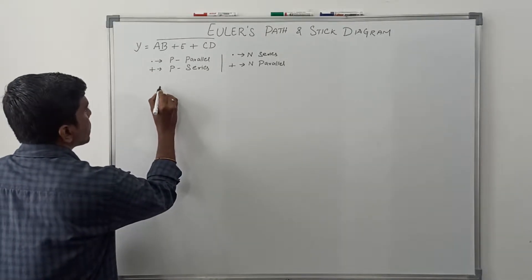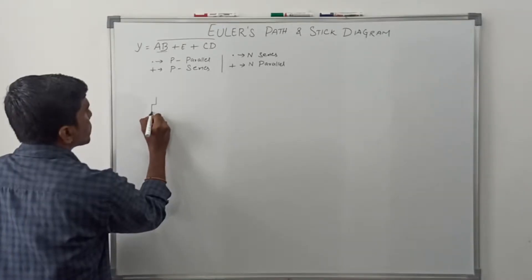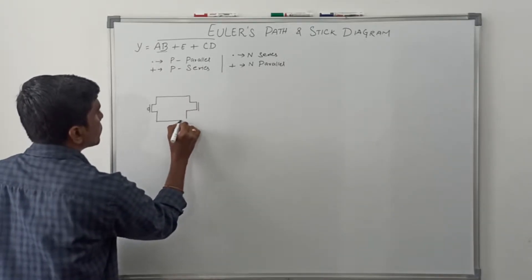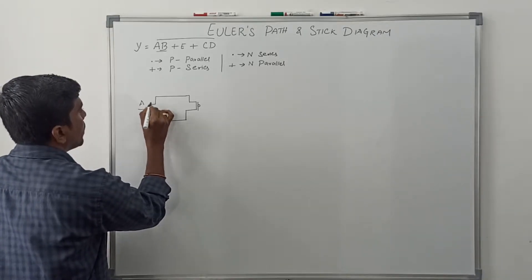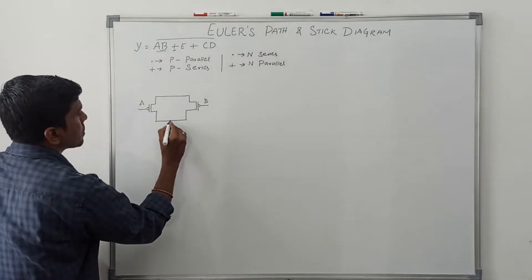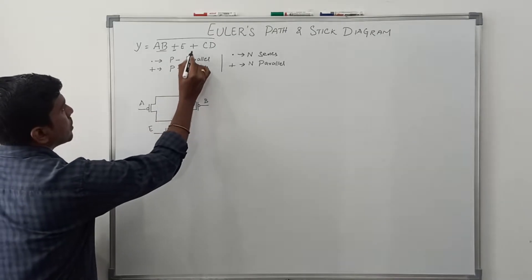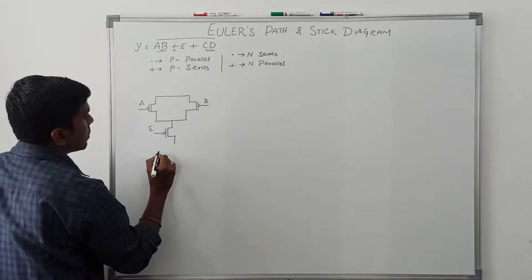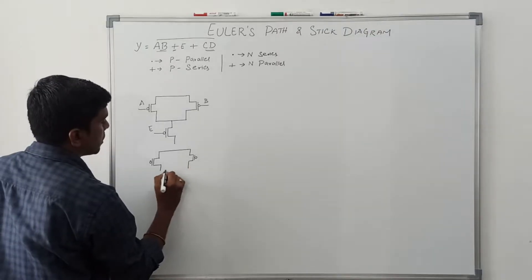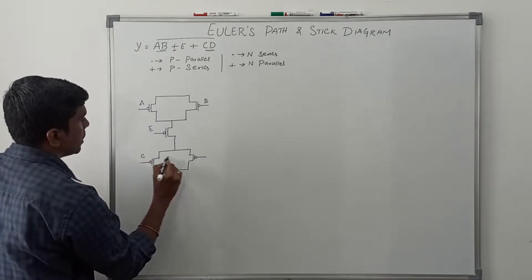Now I draw the logic diagram for this Boolean expression. The first term is AB — product is present, so the PMOS transistor is connected in parallel: gate A and gate B connected in parallel. The next operator is plus, so PMOS transistors connect in series. Then next term is CD — PMOS transistor is connected in parallel because a product is present. The terminal names are C and D.